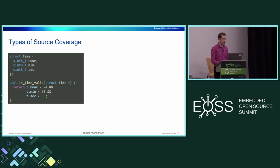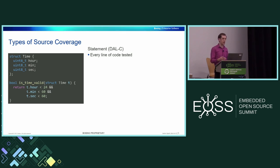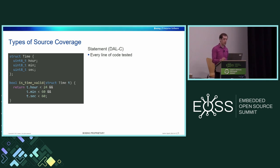Talking about the different types of source code coverage, I point to this simple C code example. There's a struct with three fields for hours, minutes, and seconds, and a single function that tells you if the time is valid — checking that the hour is less than 24, the minute less than 60, and seconds less than 60. The first type is statement coverage, which requires that you test every single statement or line in the code. In this example, there's just a single return statement. So to get 100% statement coverage of this function, you just need to call it. Statement coverage is required by DAL C.